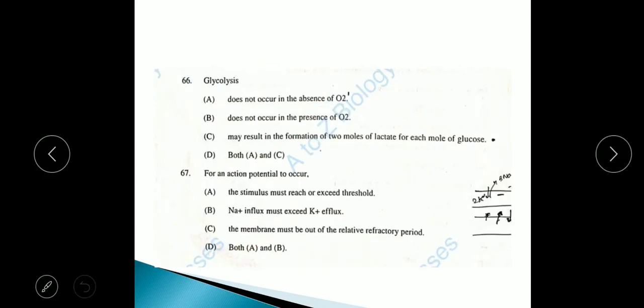Question 66: Glycolysis does not occur in the absence of oxygen, does not occur in the presence of oxygen, may result in the formation of 2 moles of lactate for each molecule of glucose. The correct answer will be option B, because glycolysis does not require oxygen in any pathway like EMP, Entner-Doudoroff, etc. Only after pyruvate, either oxygen is used for Krebs cycle or anoxygenic for alcohol or lactic acid.